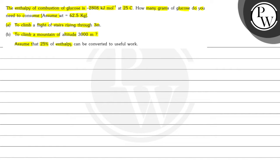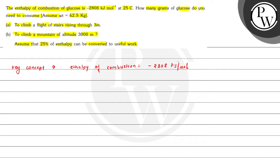Assume that 25 percent of enthalpy can be converted to useful work. Here we have to calculate grams of glucose to climb a flight of stairs rising through 3 meters and to climb a mountain of altitude 3000 meters. The key concept: enthalpy of combustion is equals to minus 2808 kilojoule per mole, and weight is equals to 62.5 kilogram.